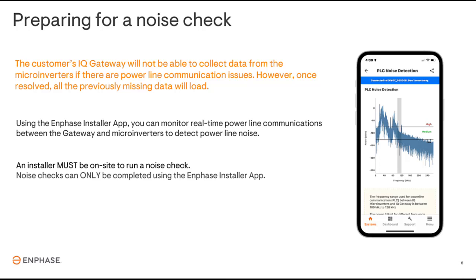Luckily, there are redundancies built into the system, and once communications have been restored, the data stored on the microinverter will be sent to the gateway. The Installer app has a feature built into it that can run real-time noise detection to diagnose noise issues, but the installer must be on site with the gateway to do so.